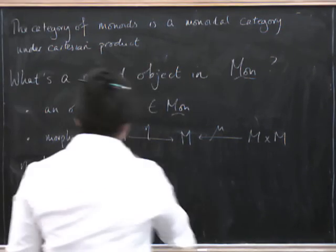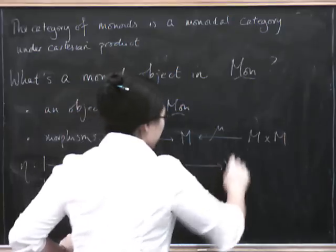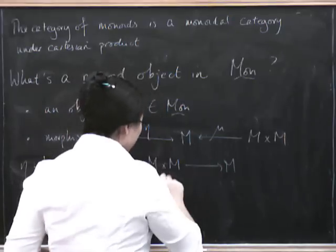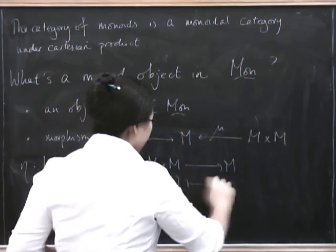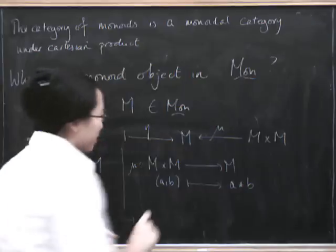What about mu? Mu has to go from M cross M to M, and it has to be a monoid map. So supposing we say that this goes from (A, B) to something that we'll call A star B, but it also has to be a monoid map.